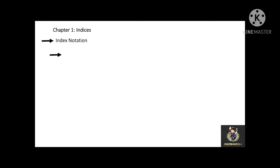Let's continue stating a to the power of negative n as 1 over a to the power of n, and vice versa. For example, 4 to the power of negative 1 can be stated as 1 over 4 to the power of 1. And if you want to find the value of 4 to the power of negative 1, then it is equal to 1 over 4, since 4 to the power of 1 is equal to 4.